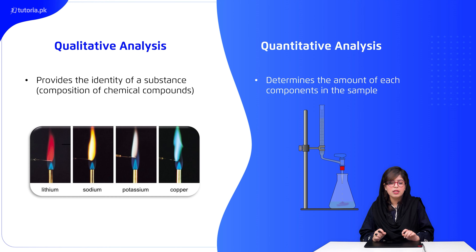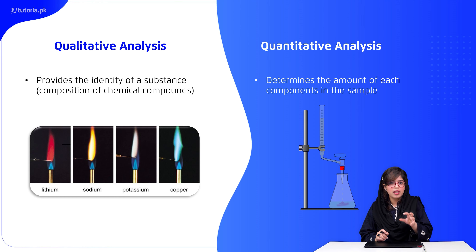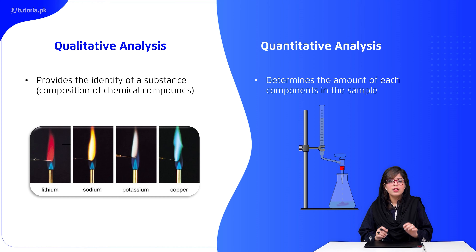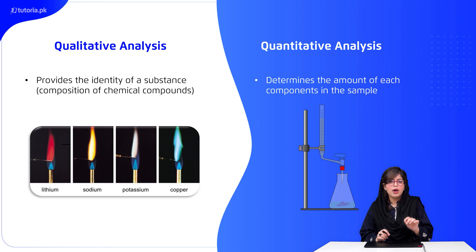Qualitative analysis can be defined as: it provides the identity of a substance. یعنی آپ کو بتاتا ہے کہ آپ کے پاس جو chemical substance ہے اس کی composition کیا ہے۔ اس کی ایک مثال elemental analysis ہے — یہ ایک طرح کا flame test ہوتا ہے جس میں آپ کسی بھی element کو flame پر heat کرتے ہیں اور وہ characteristic color دیتا ہے کیونکہ وہ specific wavelength absorb کرتا ہے اور پھر وہی energy color کی form میں radiate back کرتا ہے۔